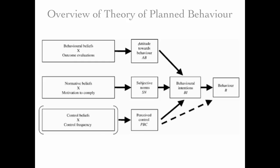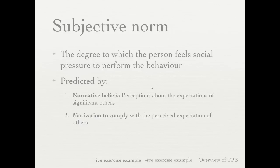In addition to attitude predicting intention, there's another construct called subjective norms. Subjective norms are basically the social pressure you feel from actual people in your life to perform a behavior. They're predicted by two things: normative beliefs — what I think significant others expect me to do — and motivation to comply — whether I'm motivated to comply with what others want. You need both, because even if many people want you to do something, if you're not motivated to comply, it won't influence your behavior.